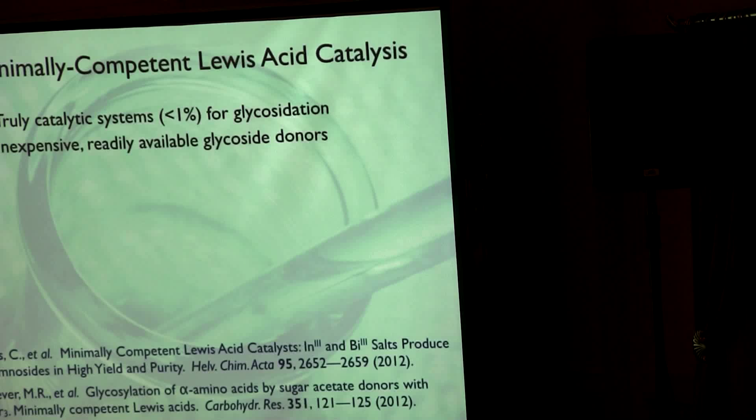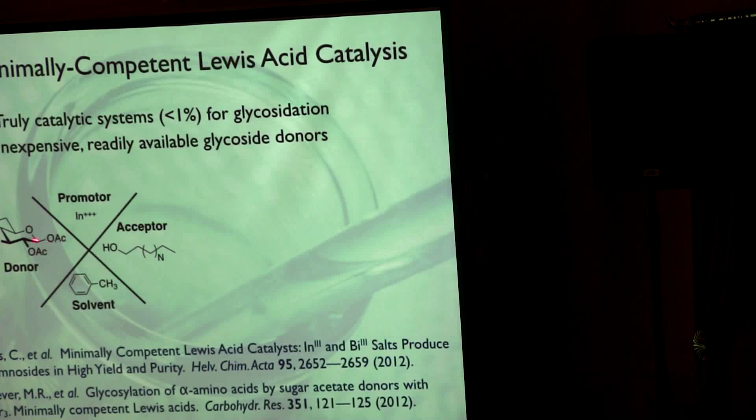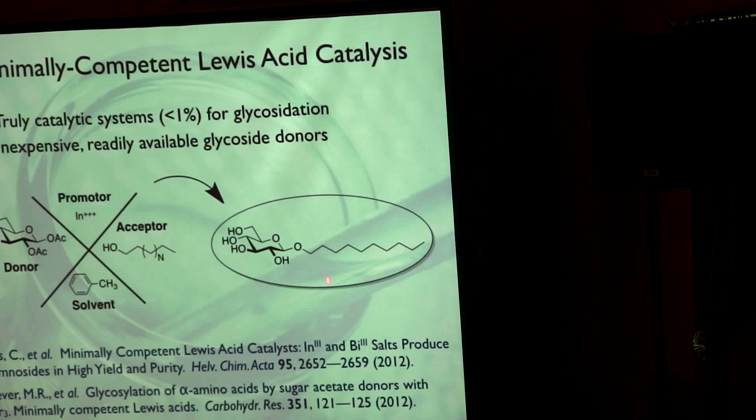So what we really want to have is a truly catalytic system, and where we can use inexpensive, readily available glycoside donors, and that's where we've, I think, made a contribution here that's actually quite useful. So here we're using the donor—is just the beta-peracetate, which is typically regarded as an intermediate more than a reactive glycoside donor. The promoter in this case is indium-3 salts, acceptor, and then solvents, which we still haven't made as much progress in this area as we'd like to.